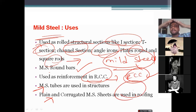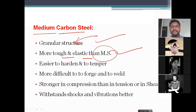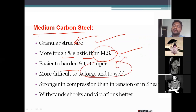Medium carbon steel is used for granular structures. It is tougher and more elastic than mild steel. It is easier to harden and temper but more difficult to forge and weld. It is stronger in compression than in tension or shear.